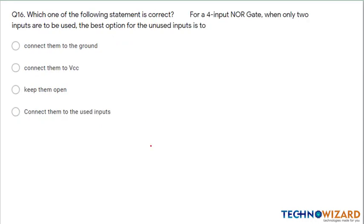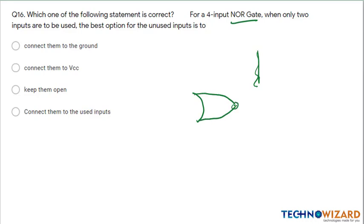Question number 16 — now all questions are based upon digital electronics. For a four-input NOR gate, when only two inputs are used — say one input is 1 and one is 0 — the best option for the unused inputs is to connect them to ground.